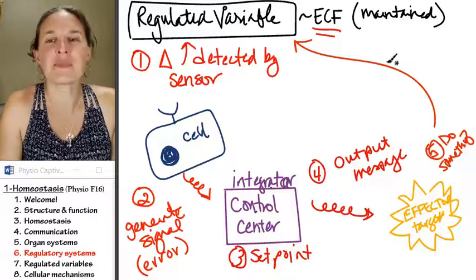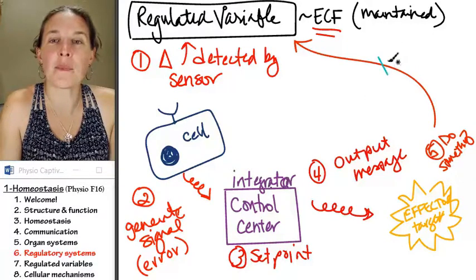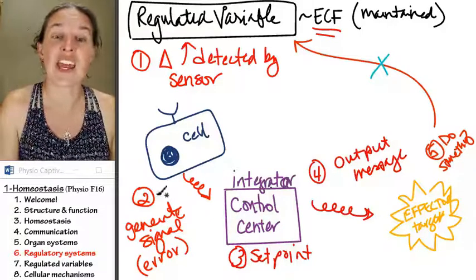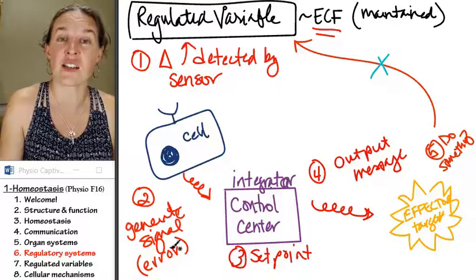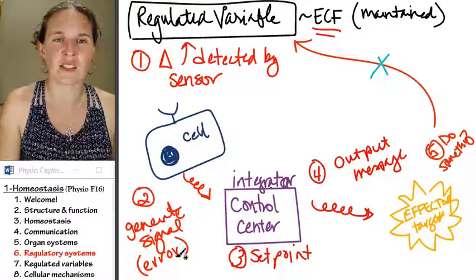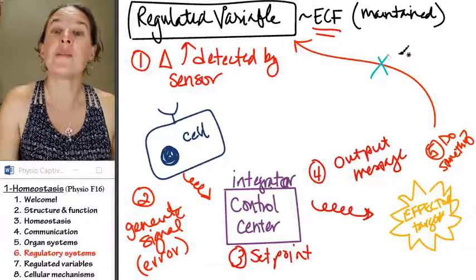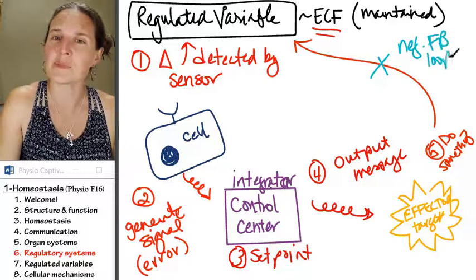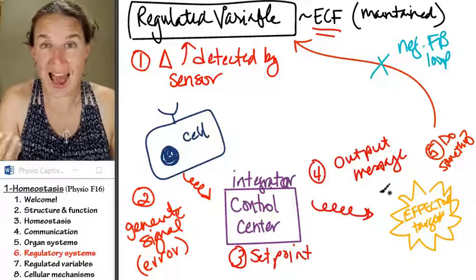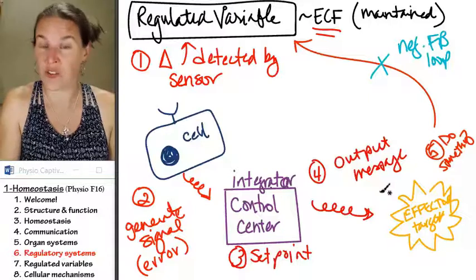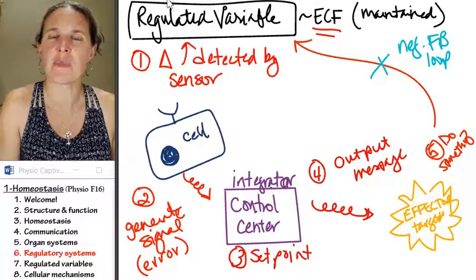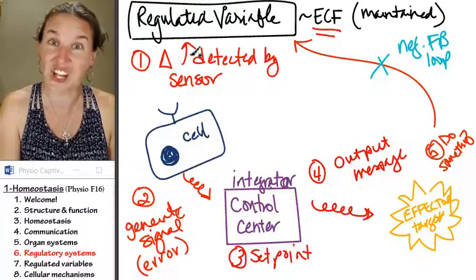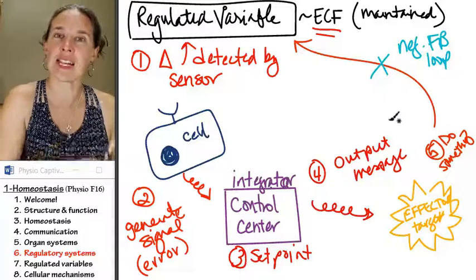In a homeostatic system, it has to bring the regulated variable back into the normal zone so that the error signal stops. We don't send that message anymore. That's actually a negative feedback loop. If the action carried out by the effector or the target functions to remove the original stimulus, which was the change detected by the sensor, then that's a negative feedback loop.